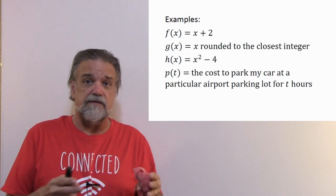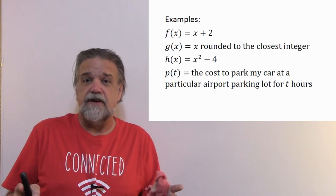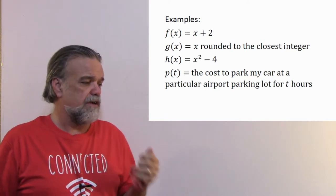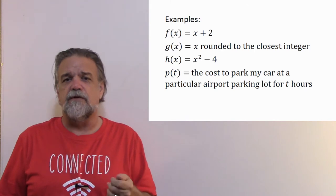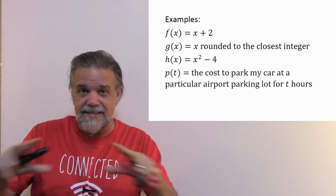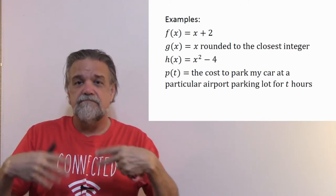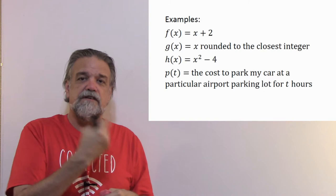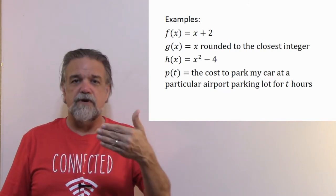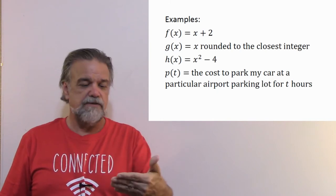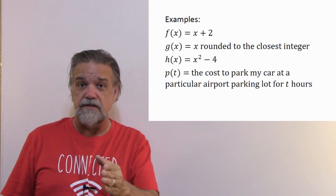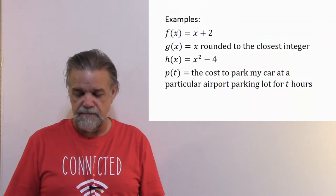Then we have p(t) — notice we're using t as our independent variable instead of x. It doesn't have to be x, it usually is, but it doesn't have to be. p(t) is the cost to park a car at a particular airport parking lot for t hours. As long as the parking lot is consistent in its pricing policy, this is a function, because you can ask how much it costs to park for half an hour or 12 hours and get consistent answers.